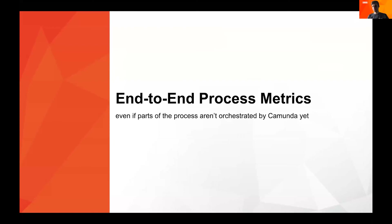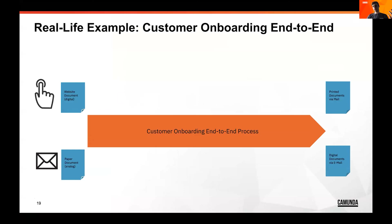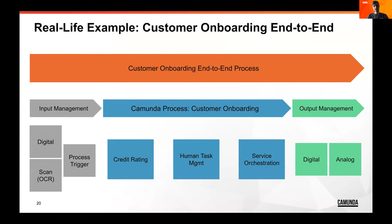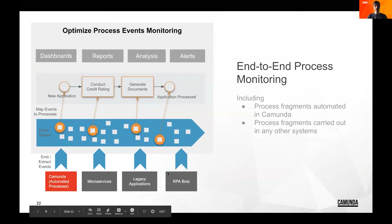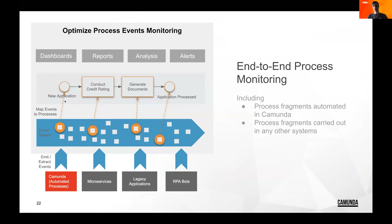Now, imagine you have a customer onboarding process but haven't fully orchestrated it with Camunda yet — perhaps parts are still in a legacy system or an output management system. With Optimize 3.0, released this year, you can ingest events from different systems — whether from Camunda or external systems, legacy applications, microservices, or RPA bots. You can then create your own process diagram or reuse one from Camunda, import it, map your process, and get the same reports as seen today with the event monitoring feature.